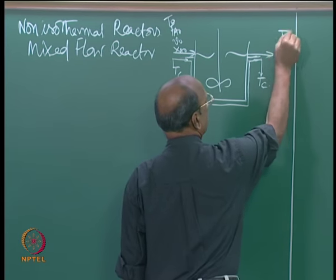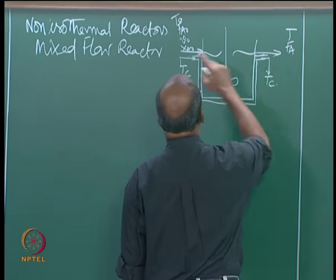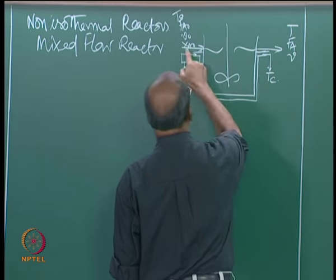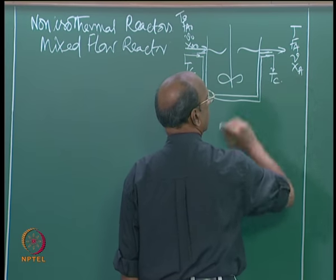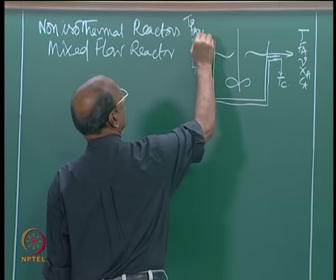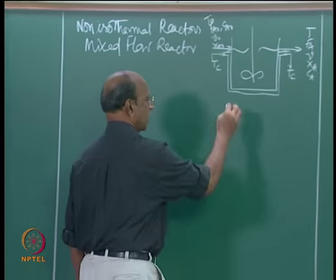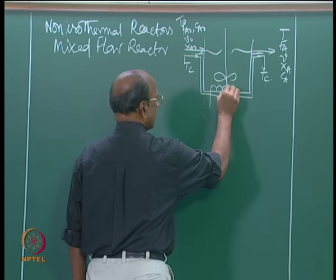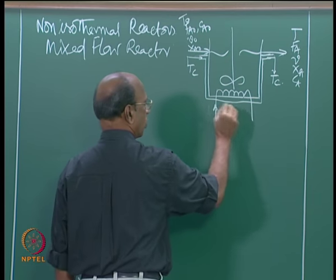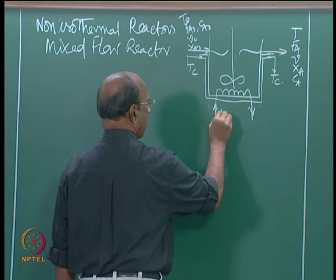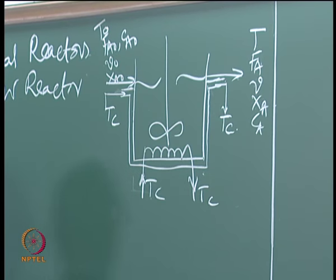On this side I have T, F_a, V, X_a, C_a, and C_a0. If the heat transfer area is not sufficient, then we may also have internal cooling coils, or both. As usual we have to write the material balance and energy balance.